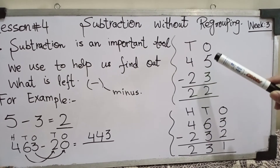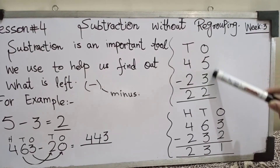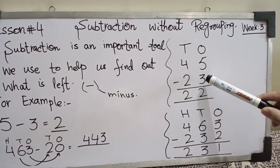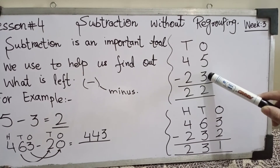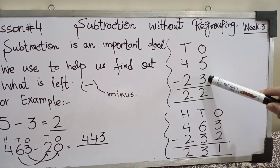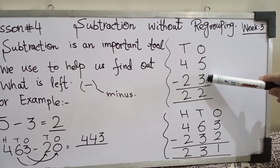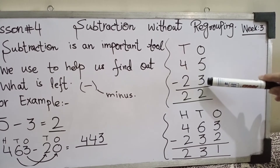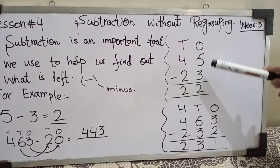In this vertical form, dear students, we always start subtracting in the ones place۔ ہم ones place سے اپنی subtraction start کریں گے۔ And there is no regrouping if the top number is greater than the bottom number — یعنی جب آپ کا top number greater ہوگا bottom number سے تو آپ regroup نہیں کروگے۔